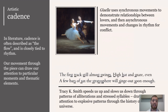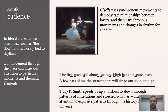Thinking about cadence — using the literary definition, meaning the flow when you read a piece, how a sentence moves you along. It's closely tied to rhythm and movement, which can pull us through a piece and communicate a metaphor. In Giselle, dancers move together to show a tight relationship, then move apart to different beats, communicating separation or drama. In Tracy K. Smith's poem, patterns of alliteration and stressed syllables speed us up and slow us down: 'The first track still almost swings — high hat and snare, a few bars of sax — the stratosphere will singe out soon enough.'